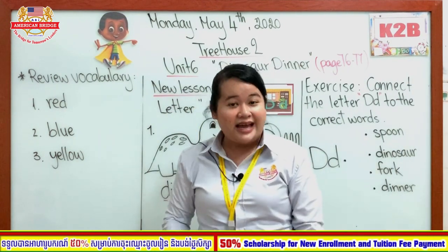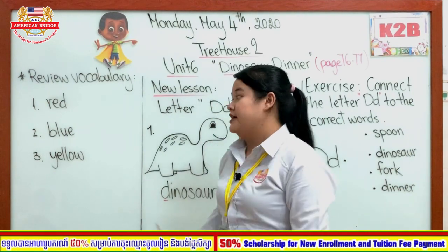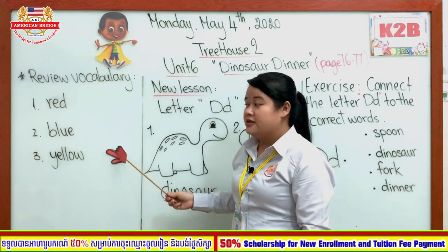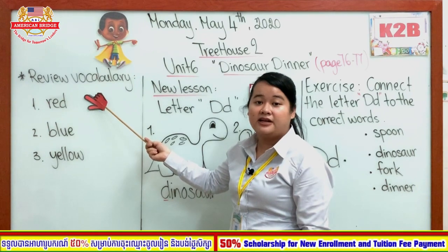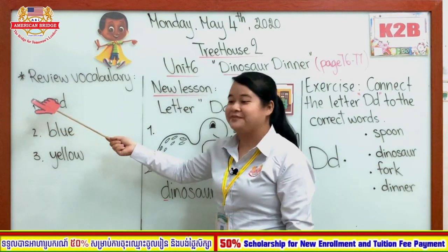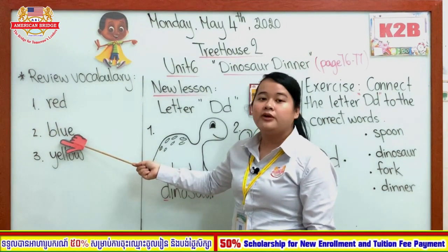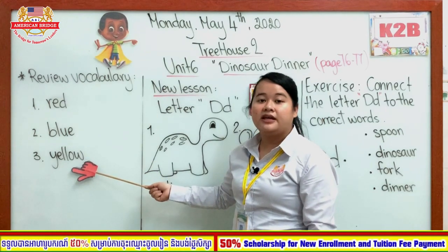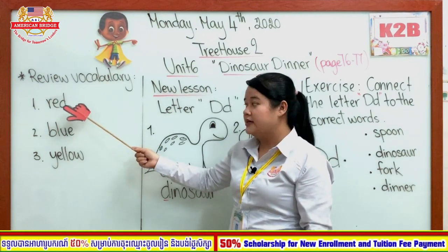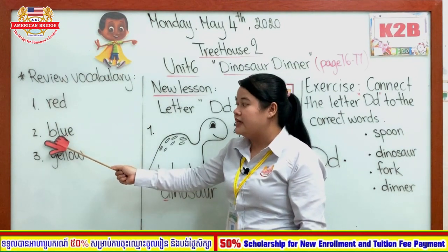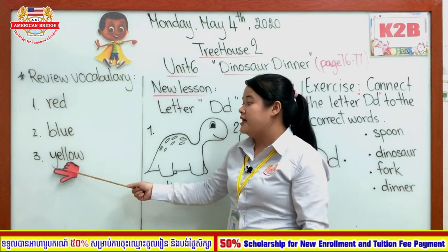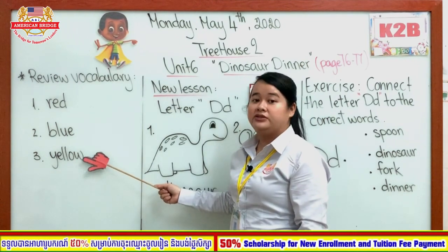Before we start our lesson today, let's review our vocabulary. Here is our previous vocabulary that you studied last Friday. Let's repeat after me again and spell all together. Number one: Red — R-E-D. Number two: Blue — B-L-U-E. Number three: Yellow — Y-E-L-L-O-W.